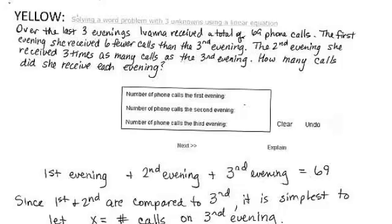Here's a word problem from the MA101 class. Over the last three evenings, Ivana received a total of 69 phone calls. The first evening, she received six fewer calls than the third evening. The second evening, she received three times as many calls as the third evening. How many calls did she receive each evening?